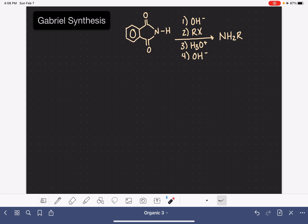The Gabriel synthesis is a four-step reaction that can be used to create a primary amine. I'm going to show you the mechanism for this reaction. It's actually pretty cool.